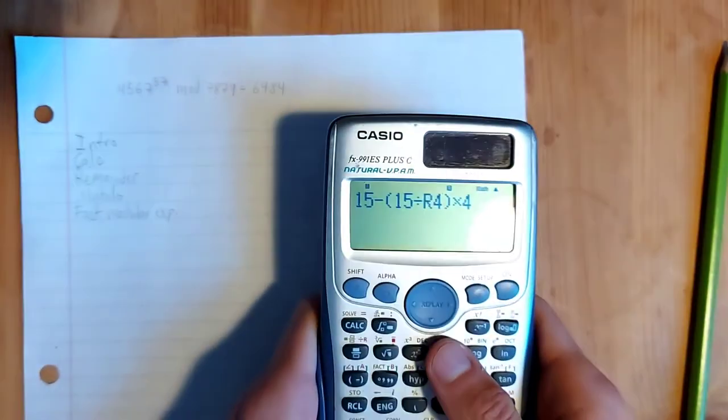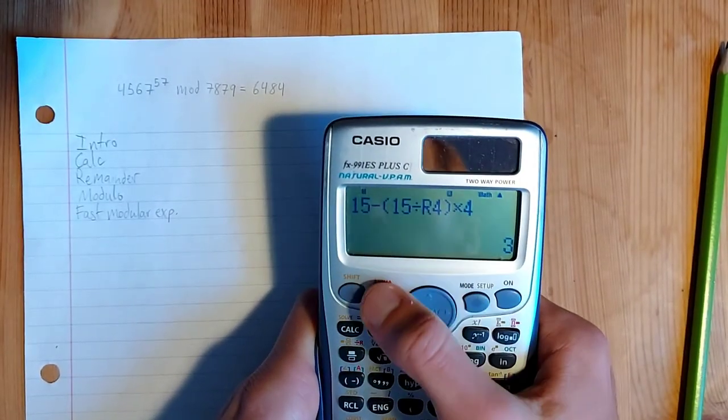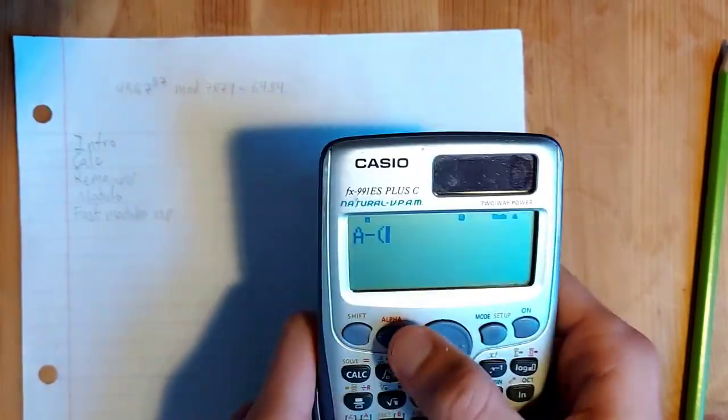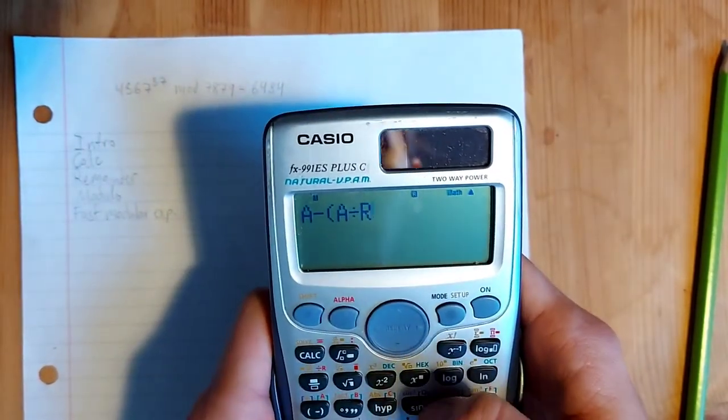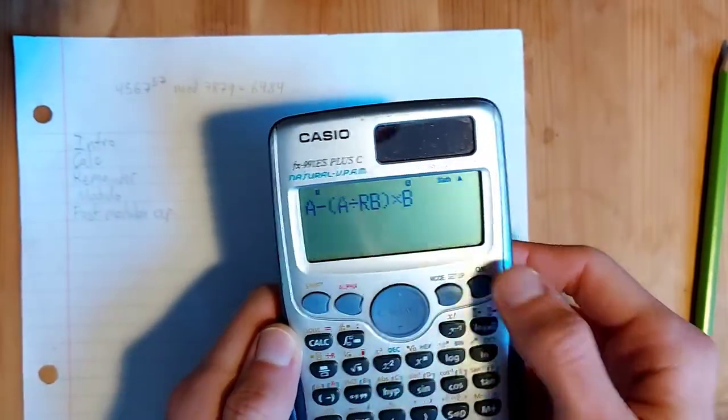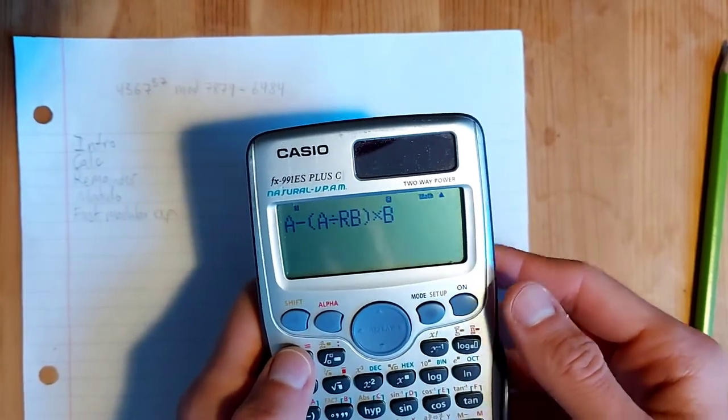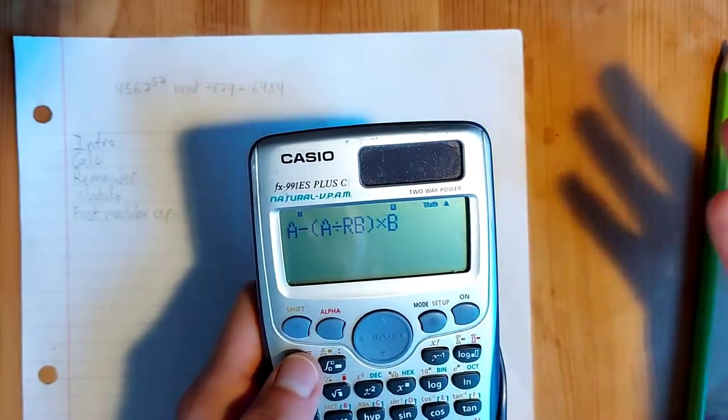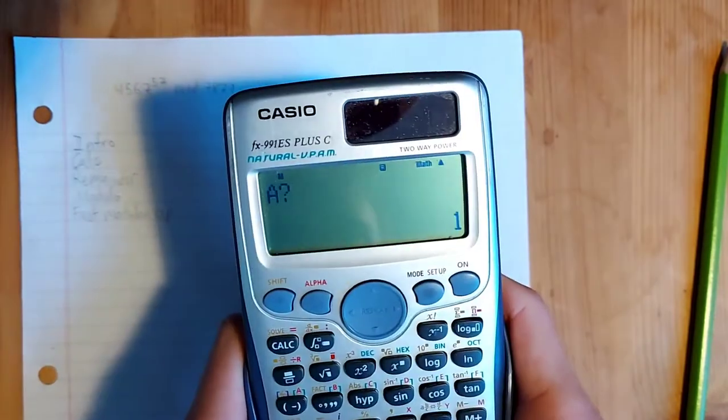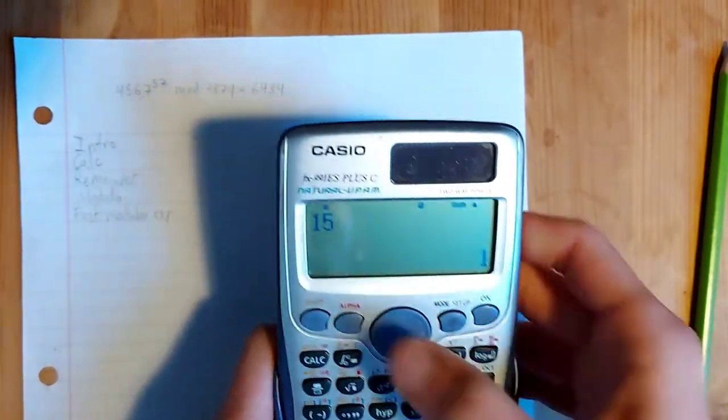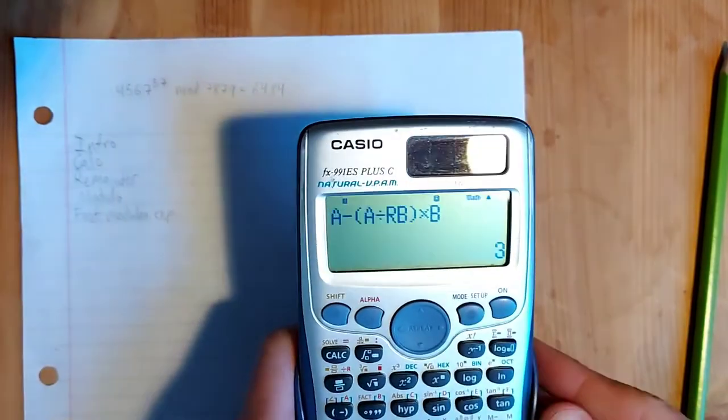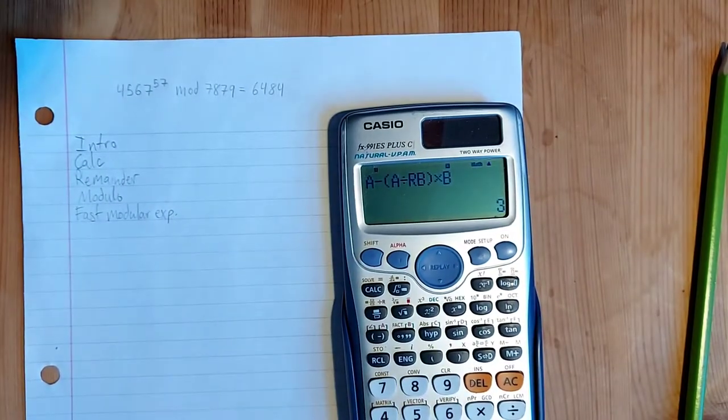And so we can actually, now that we have this method of doing it, combine that with calc and put in an expression like a minus a integer divide b times b. So we now have this expression, which should basically allow us to put in any a and b, where b is the modulus, and then we can calculate that modulus operation. So if we want to do the same 15 mod four that we did before, we can put in 15 for a and then four for b and we're going to get three out. So that's how we perform modulus on it.